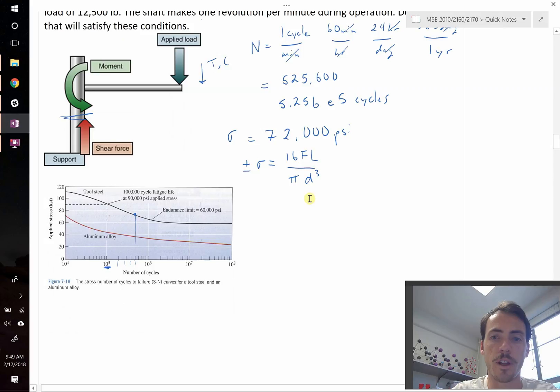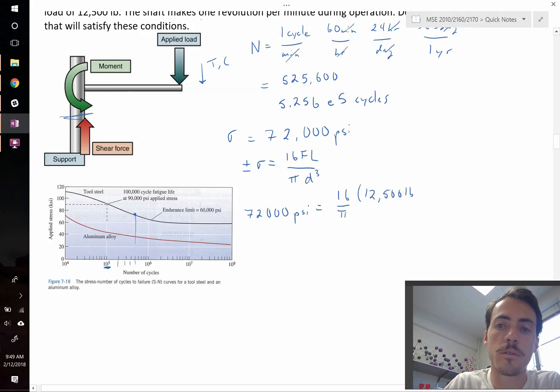So now that we know that, we can go ahead and plug this in. We can say that, okay, 72,000 pounds per square inch, PSI, is then equal to 16 over pi, which is just going to be a constant, multiplied by our force, 12,500 pounds, right? And then, multiplied by the length, that's going to be 96 inches, divided by the diameter cubed.